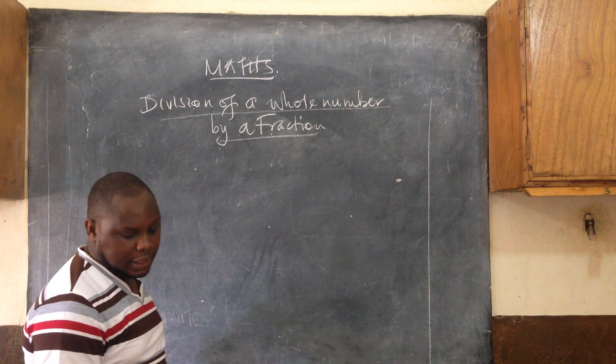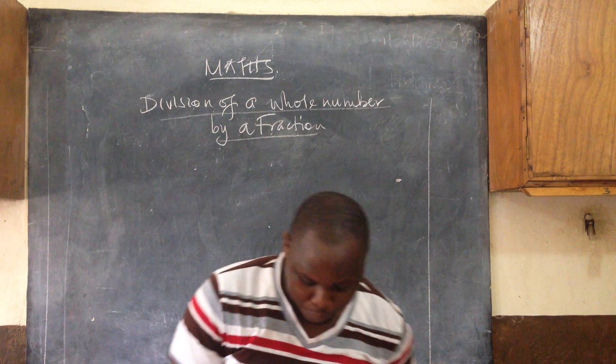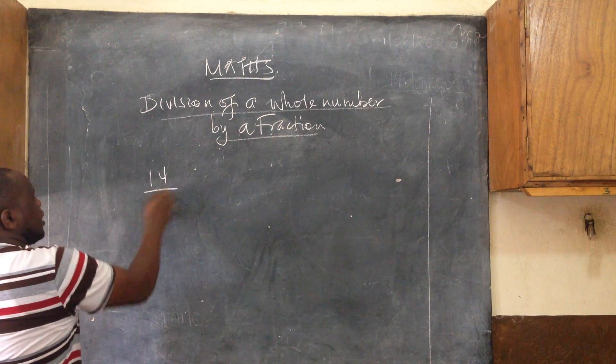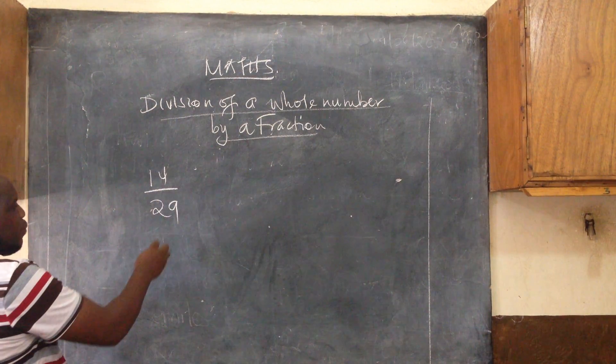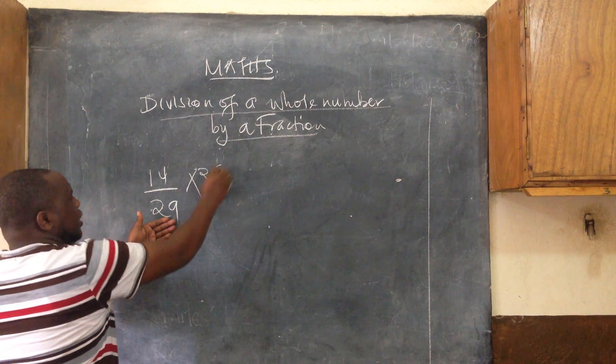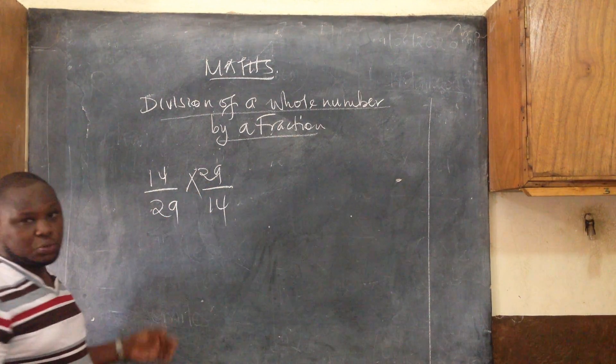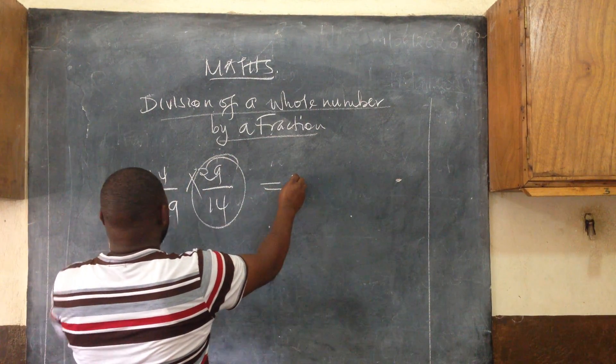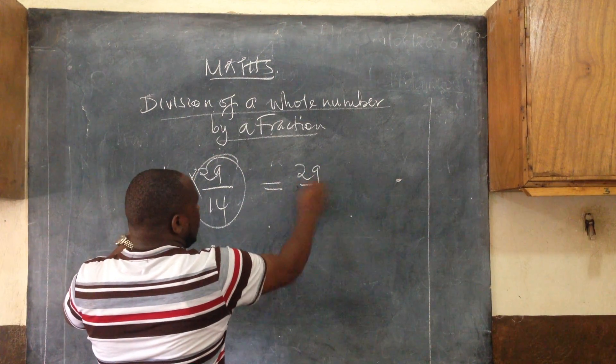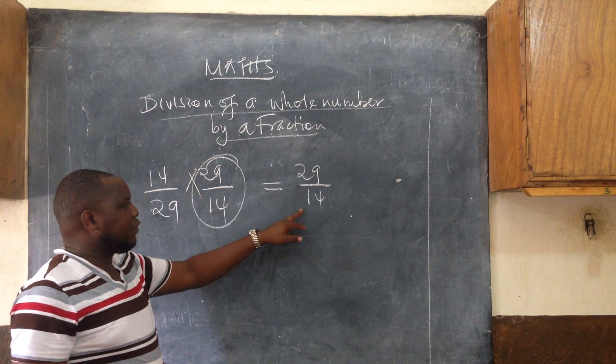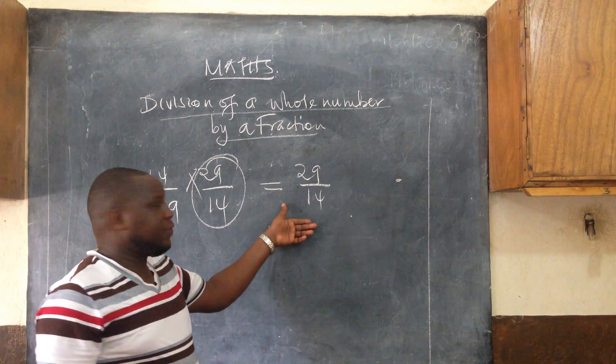Given a question like the reciprocal of 14 over 29, the reciprocal is that number which when you multiply with this one gives you one. That number is 29 over 14. This becomes the reciprocal of 14 over 29, which is 29 over 14. But this one needs to be simplified.